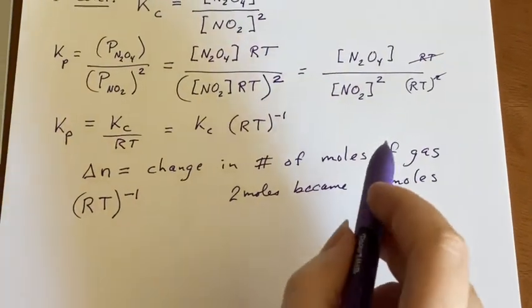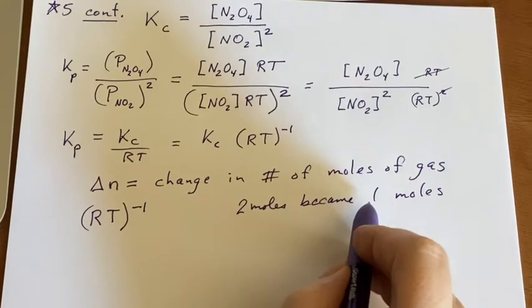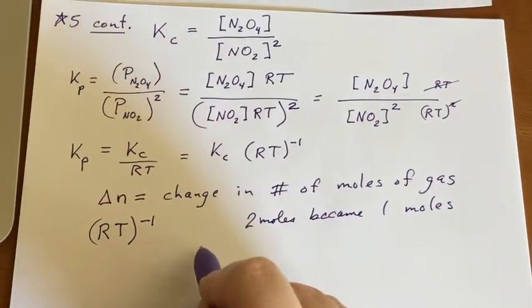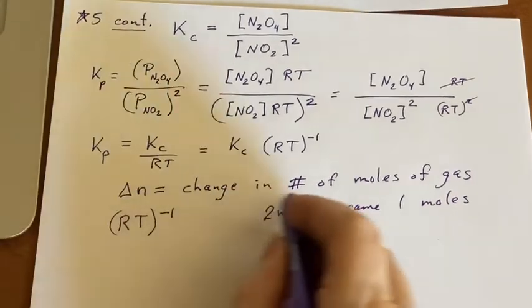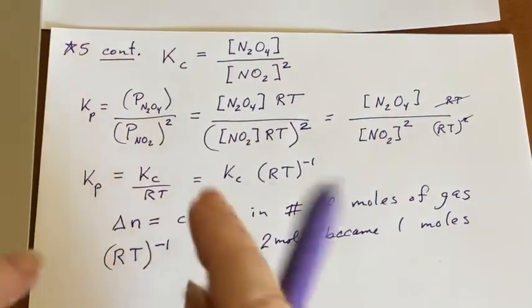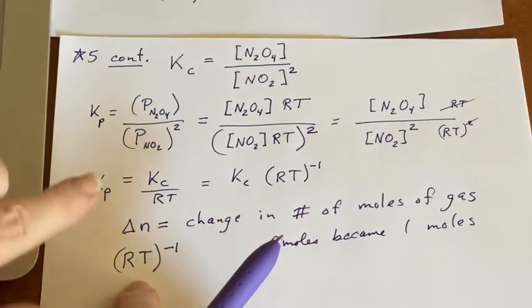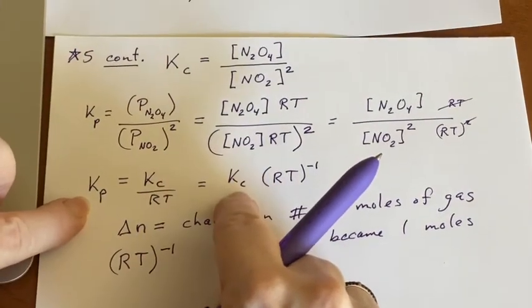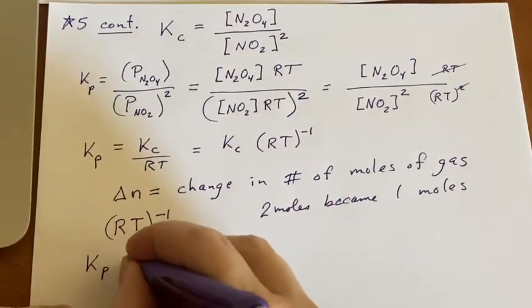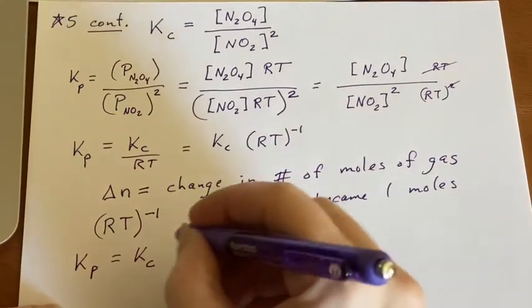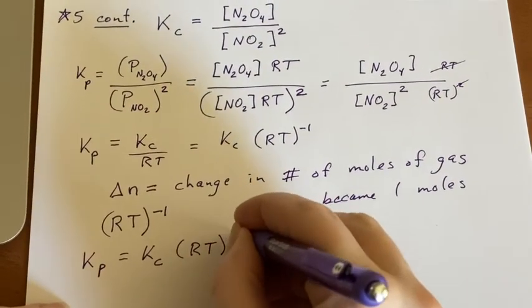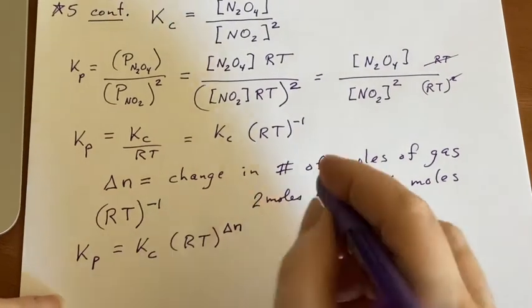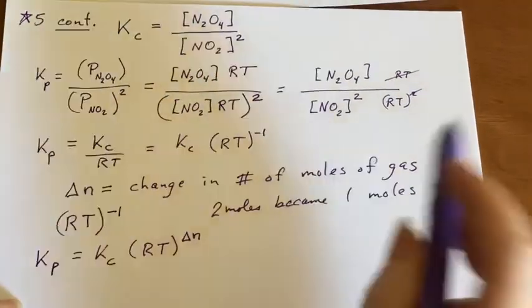So you're always looking at the products minus the reactants. So one minus two is a negative one, and you end up with a negative one right here. So that's your change in the number of moles of gas. And that's how K sub P and K sub C are related. So we actually have a formula where we say K sub P equals K sub C, and then it's going to be RT to the delta n, where the delta n is the change in the number of moles of gas.